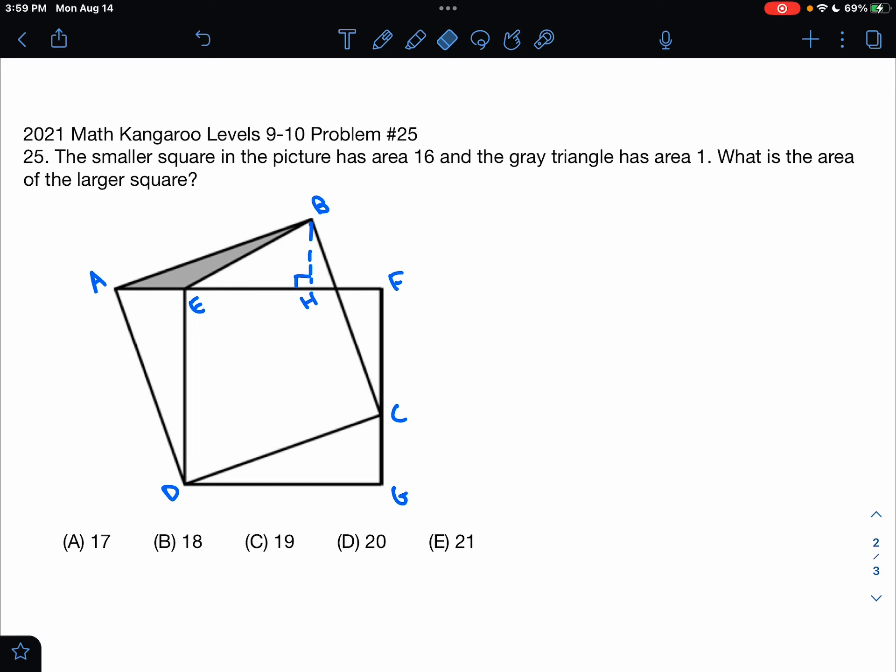From the problem we know that the smaller square, in this case EFGD, has area 16, so that means a side length of 4, and we know that the gray triangle has area 1.